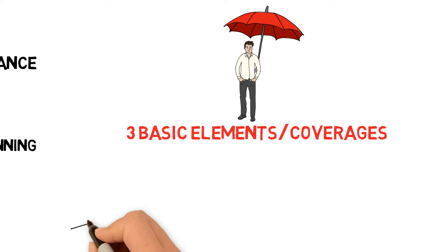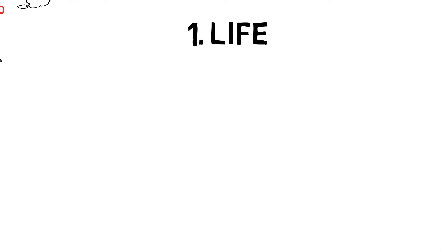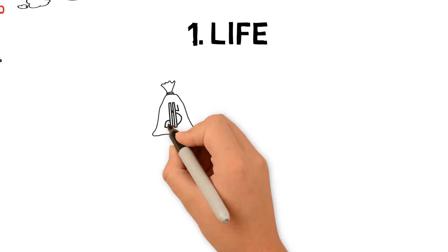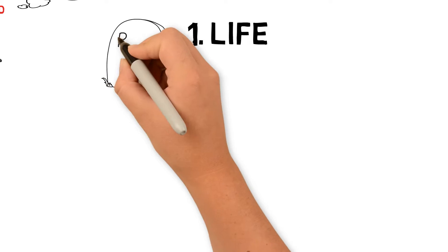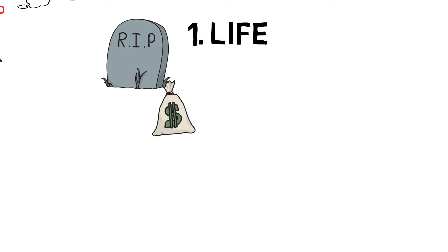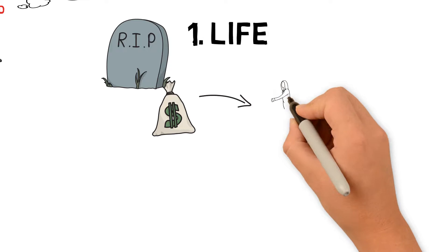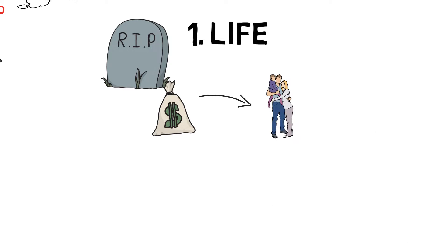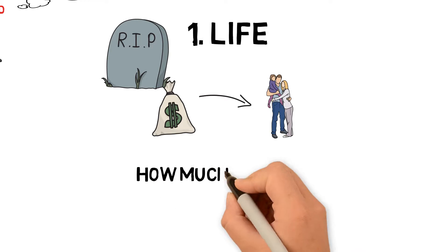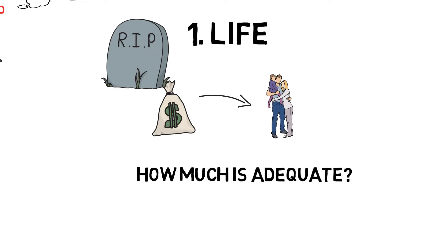Number one: life. This is a lump sum of cash which will be claimed out should death occur to the person insured. Usually, this money will benefit the families. Now here's the roadblock — how much is adequate? 10,000? 100,000? Or 1 million?